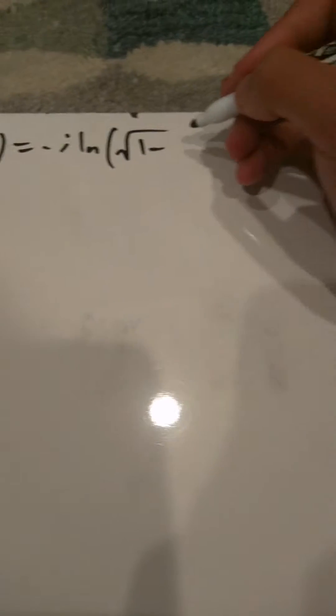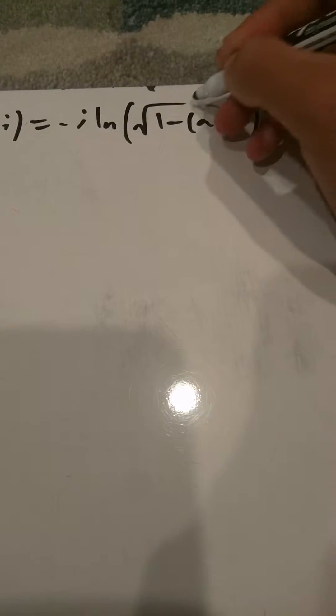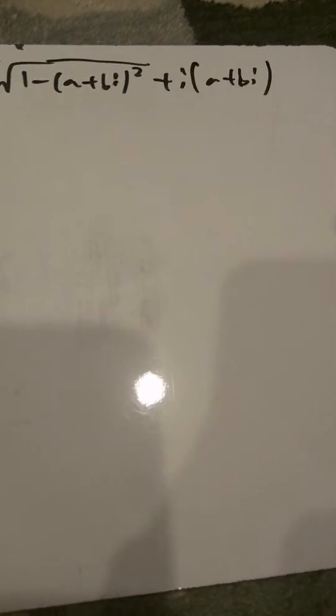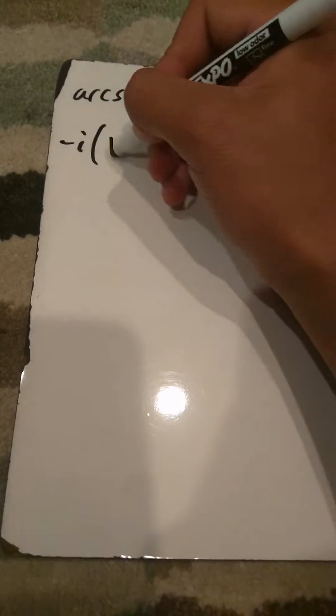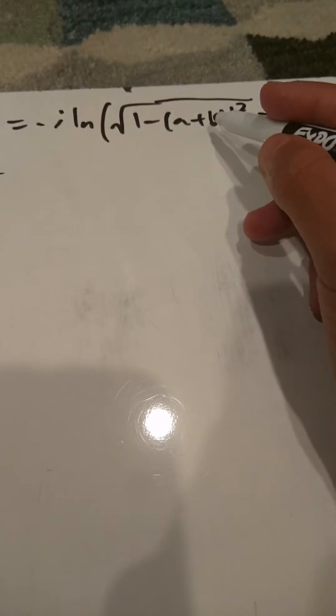I already went over the cosecant of a complex number, so let's start. Arcsine of a plus bi equals — there's a formula for it — negative i times ln of the square root of one minus x, so one minus (a plus bi) squared, plus i times (a plus bi).